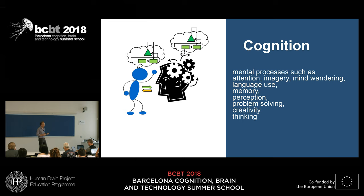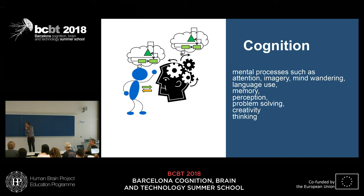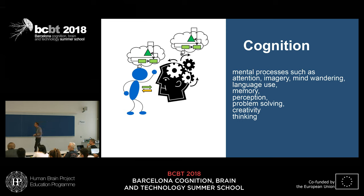This was followed by the cognitive turn, in which mental processes and internal representations became much more important. In behaviorism, it makes no sense to investigate imagery, mental time travel, or totally internal processes because they have no direct behavioral output. But they are extremely important for understanding brain mechanisms. Mental processes such as attention, imagery, and mind wandering become researchable using cognitive terms. We developed a bag of new terminology: memory, perception, problem solving, creativity, thinking. That left us with many different fields that could be investigated, but that didn't lend itself to a unifying theory.